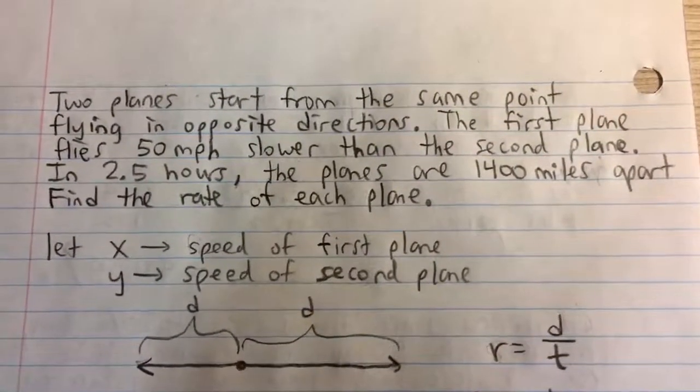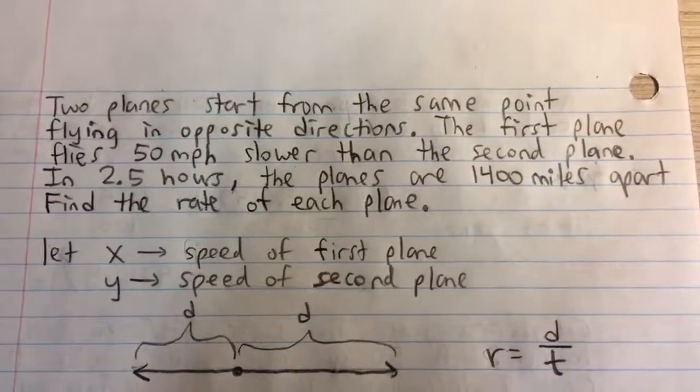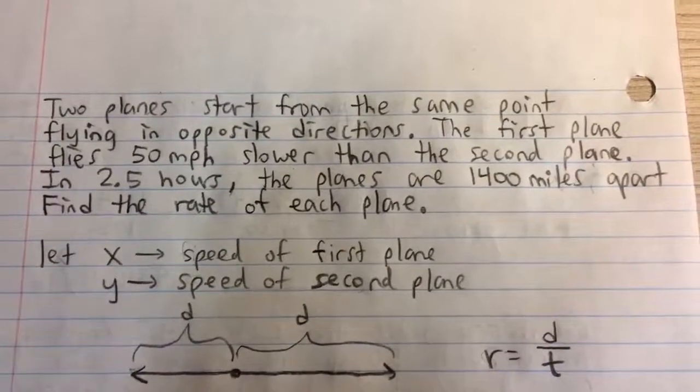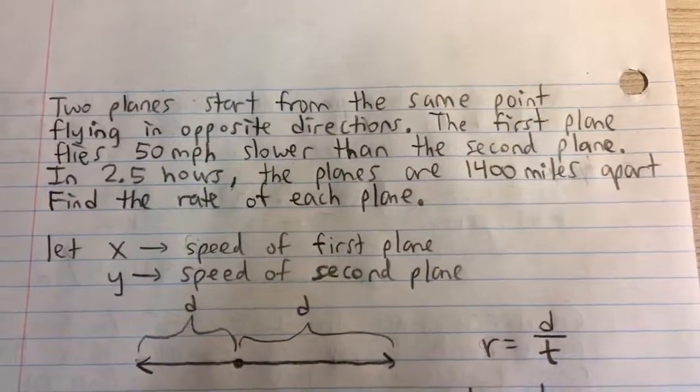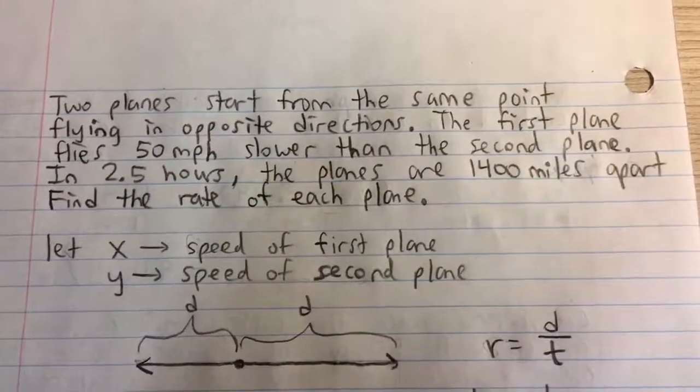Two planes start from the same point flying in opposite directions. The first plane flies 50 miles per hour slower than the second plane. In 2.5 hours, the planes are 1,400 miles apart. Find the rate of each plane.